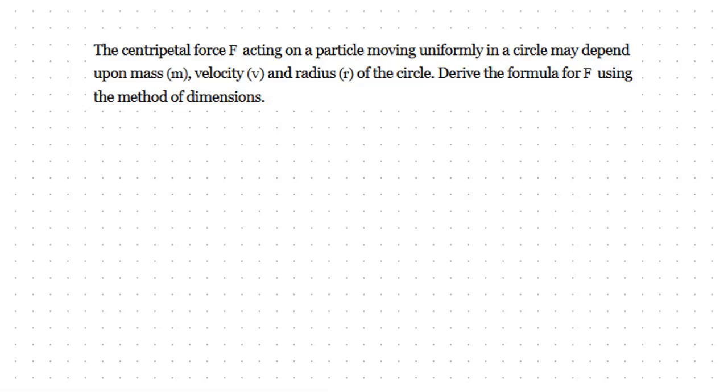Centripetal force F acting on a particle moving uniformly in a circle depends on mass, velocity, and radius of the circle. Derive the formula for F using methods of dimension. This is a question in Dimensional Analysis.